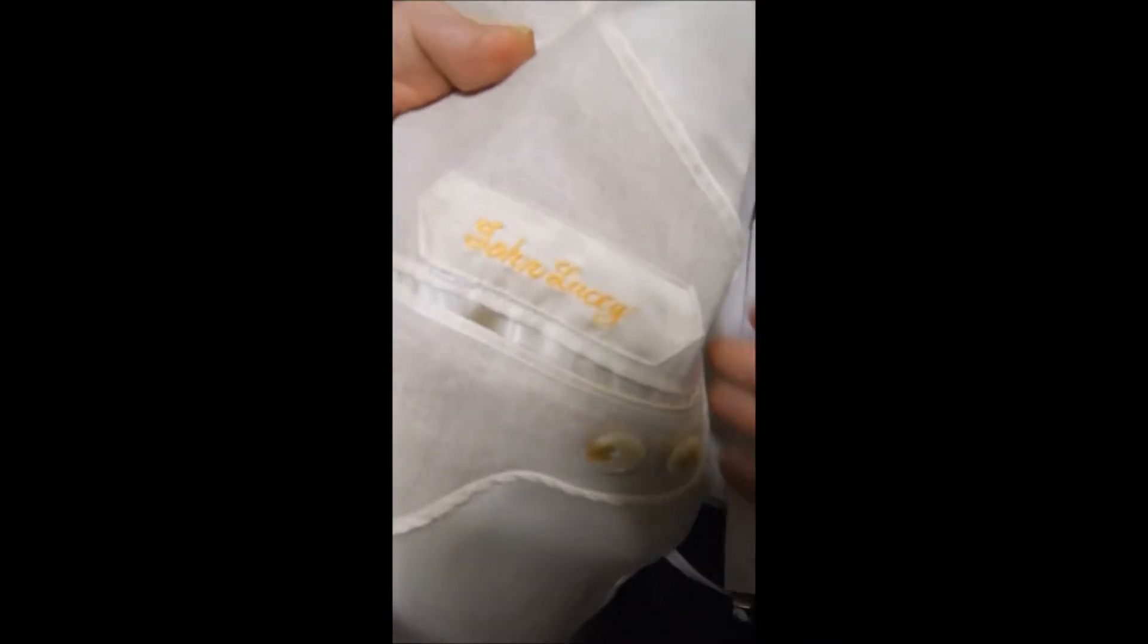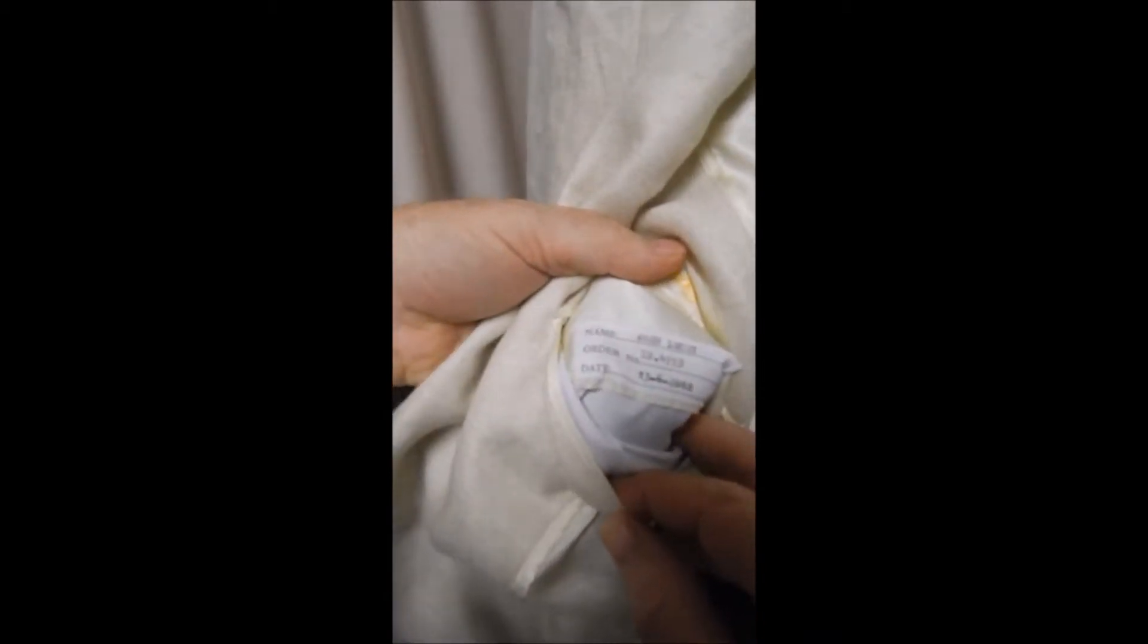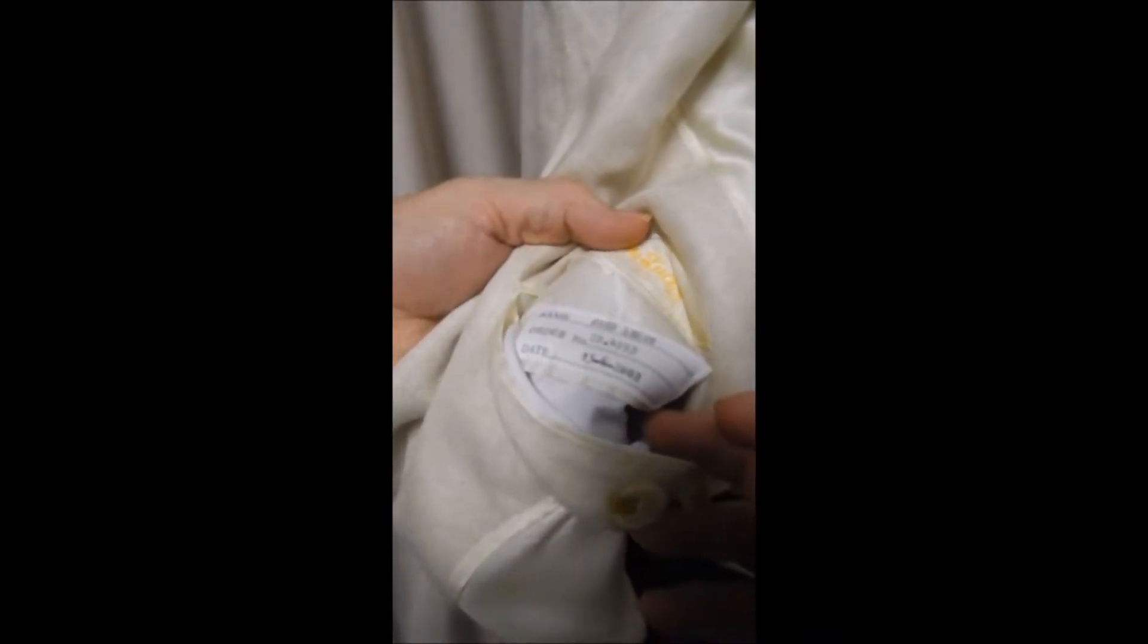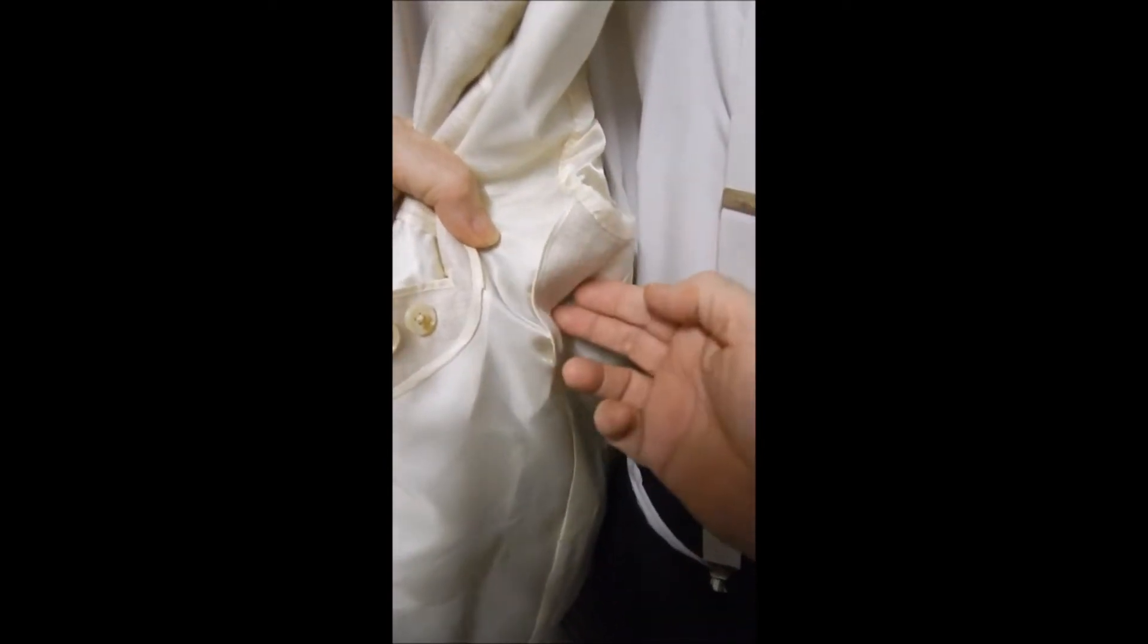Inside here we see it was made for John. We've got extra buttons in here. We see the data on the bespoke make. It's got linen shell sweat guards.